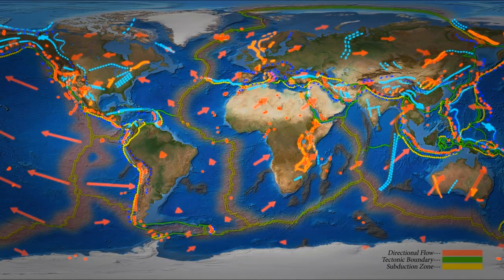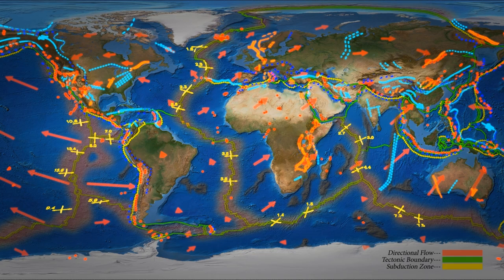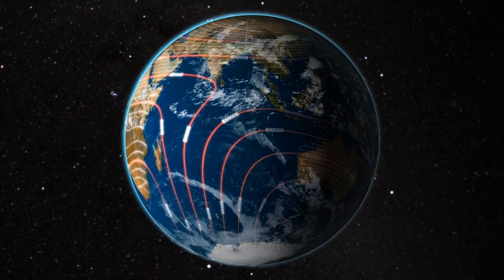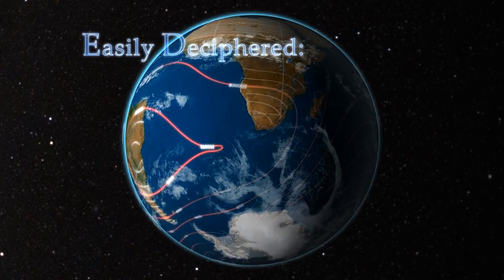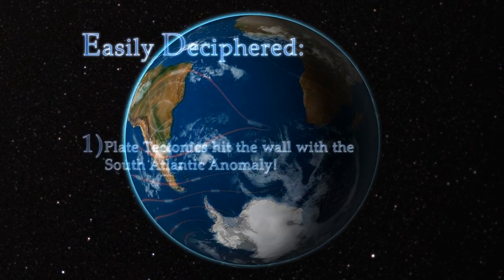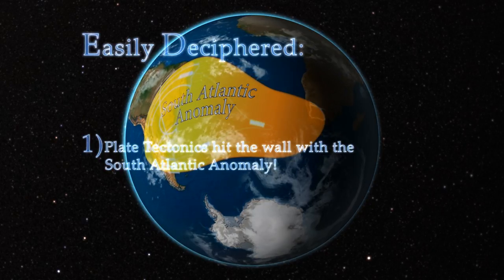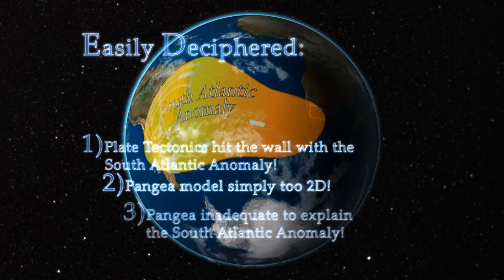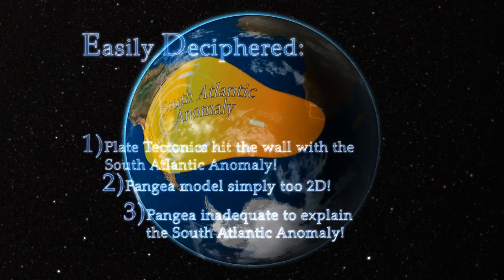We have the spread rates at boundary lines mapped, and even the directional flow of all surface crusts on the planet available. And if we throw in all the volcanic hot spots, and even the known reverse faults with their overthrusted subduction zones, a completely different model of continental origins emerges. Now I know this all sounds a bit confusing, but it is easily deciphered. If we see that plate tectonics has hit the wall with the South Atlantic anomaly, the Pangea model that plate tectonics is so founded its position on is simply too 2D and inadequate to explain this vast anomaly. According to plate tectonics, the South Atlantic anomaly shouldn't be there, but it is.